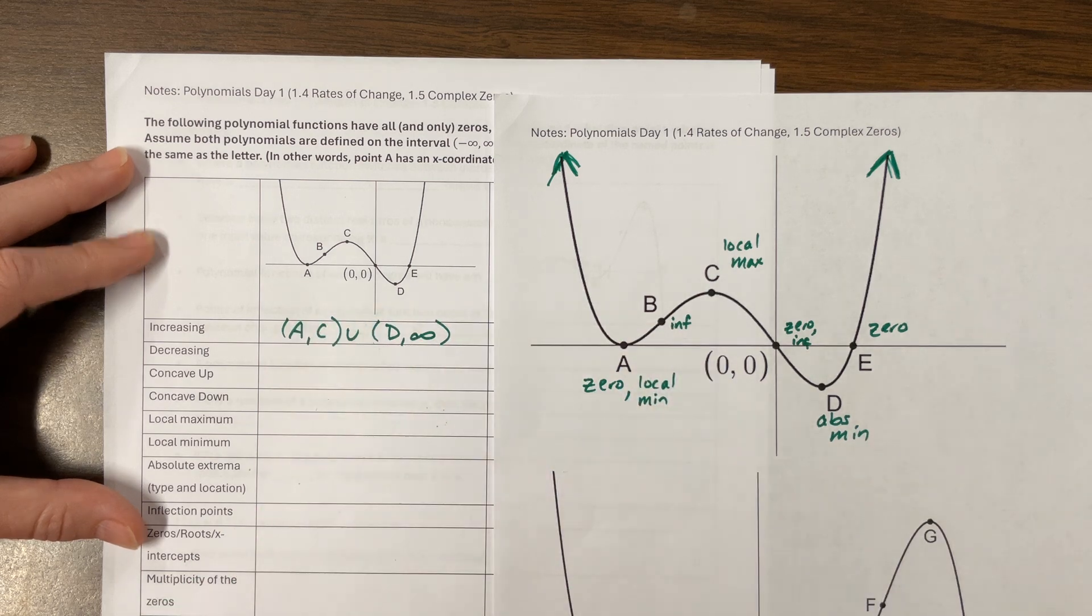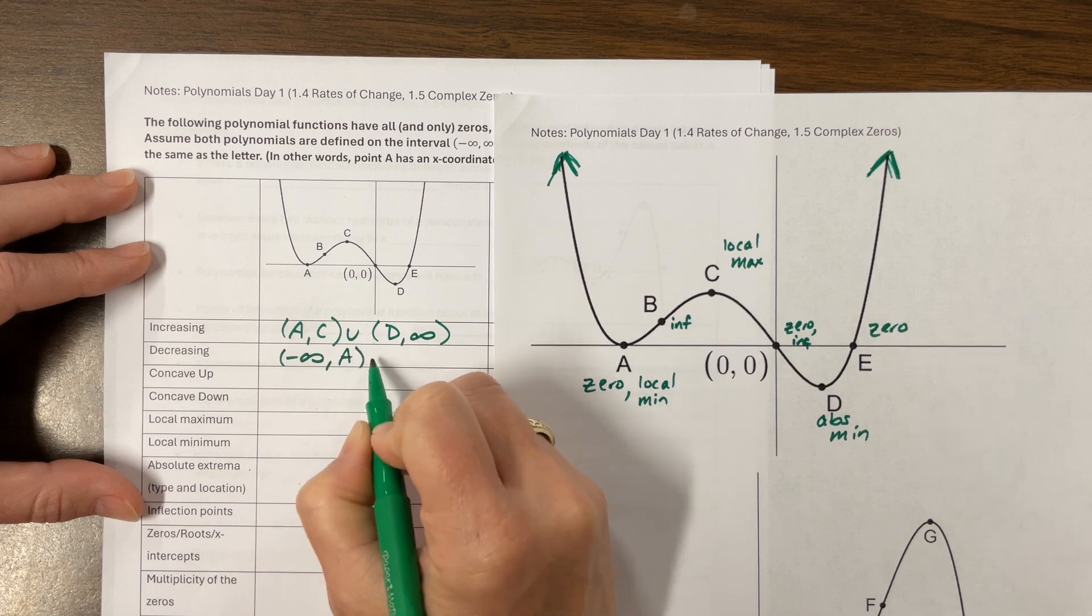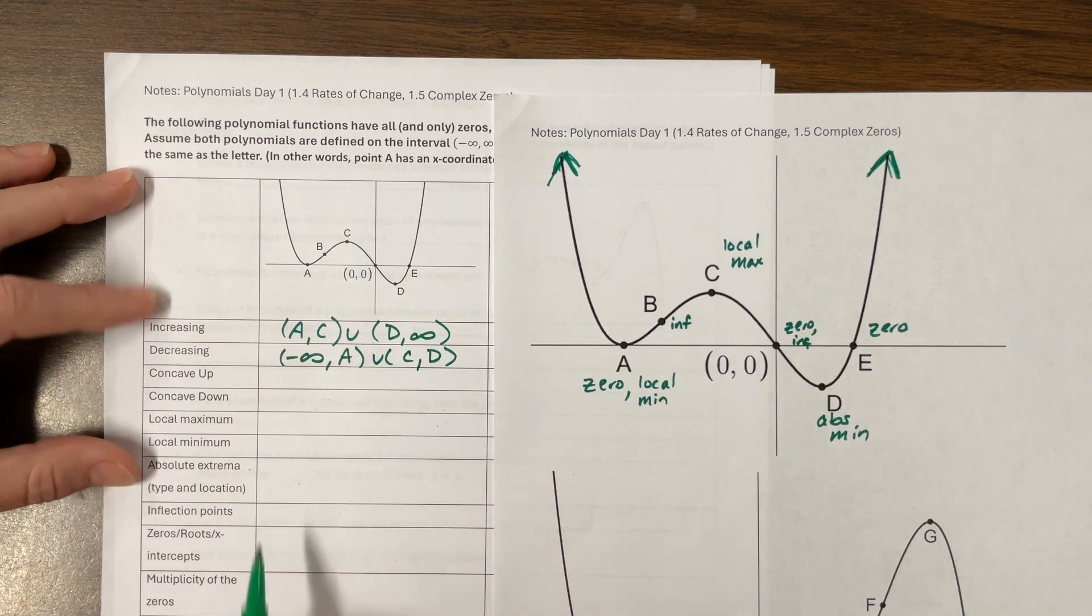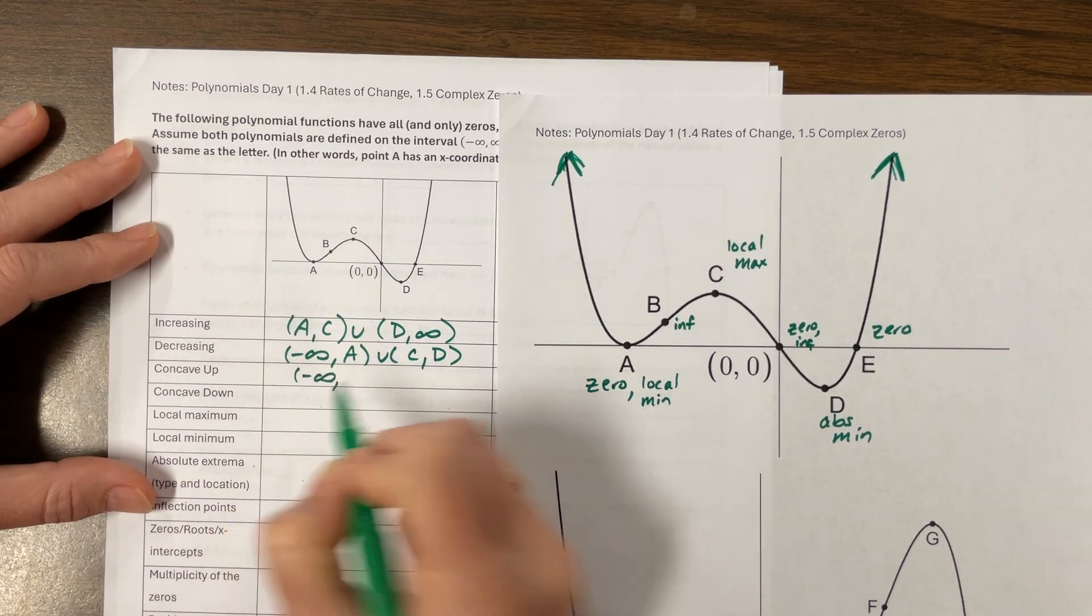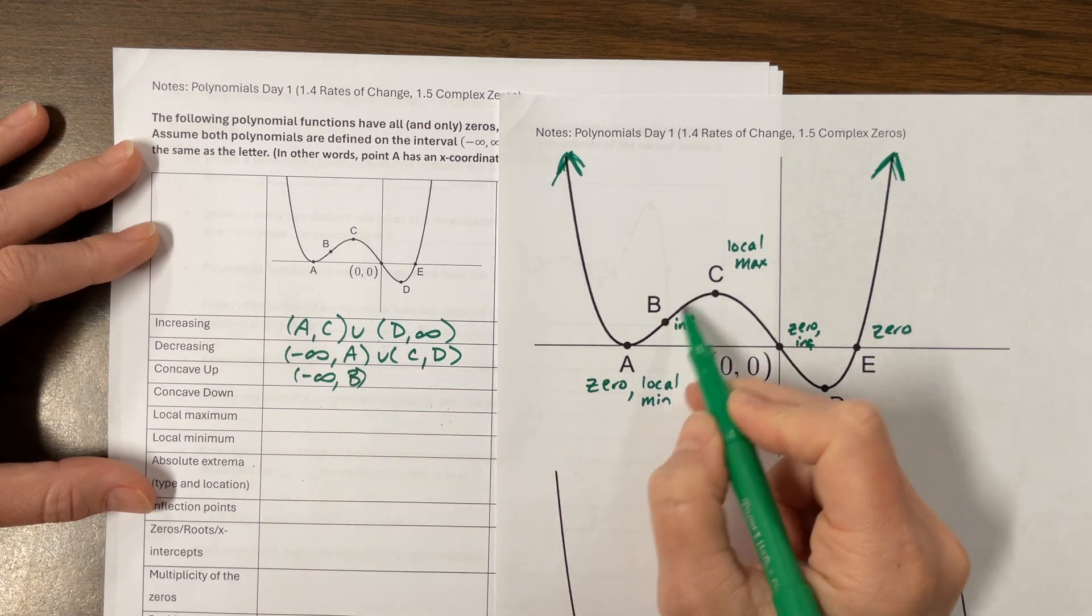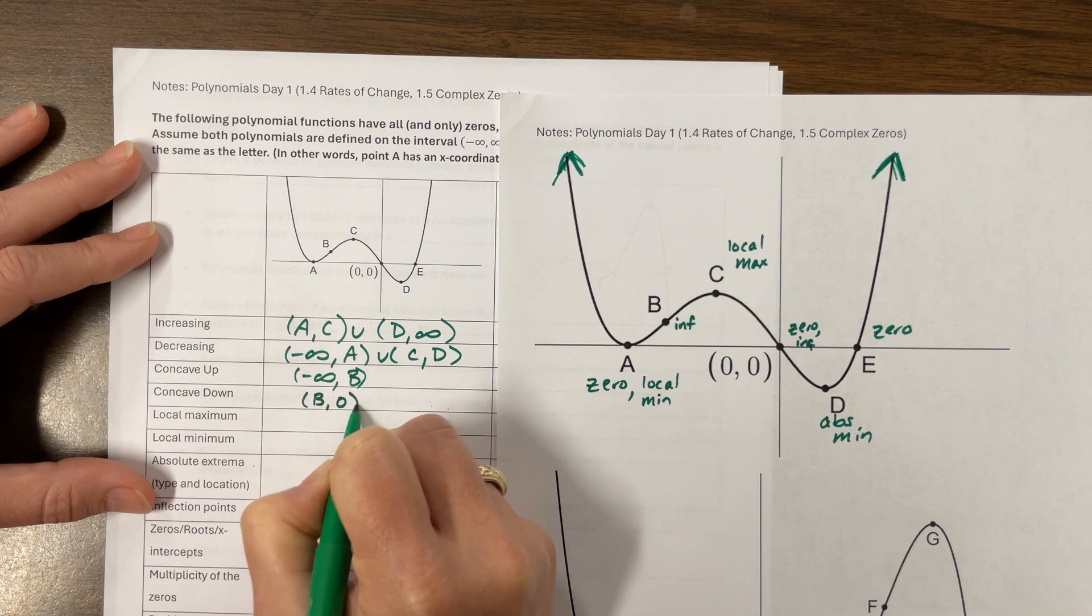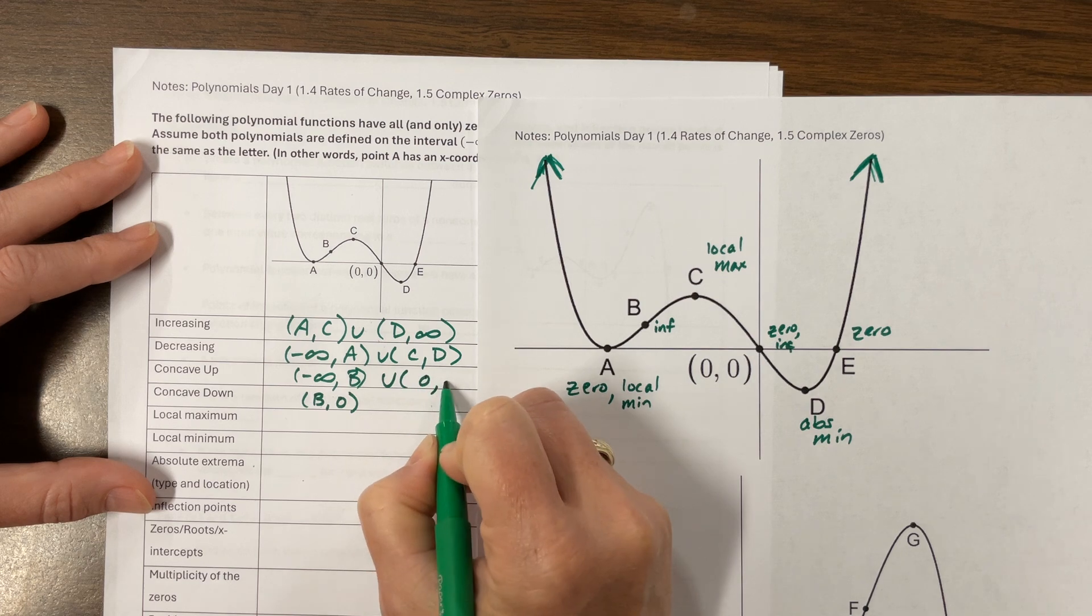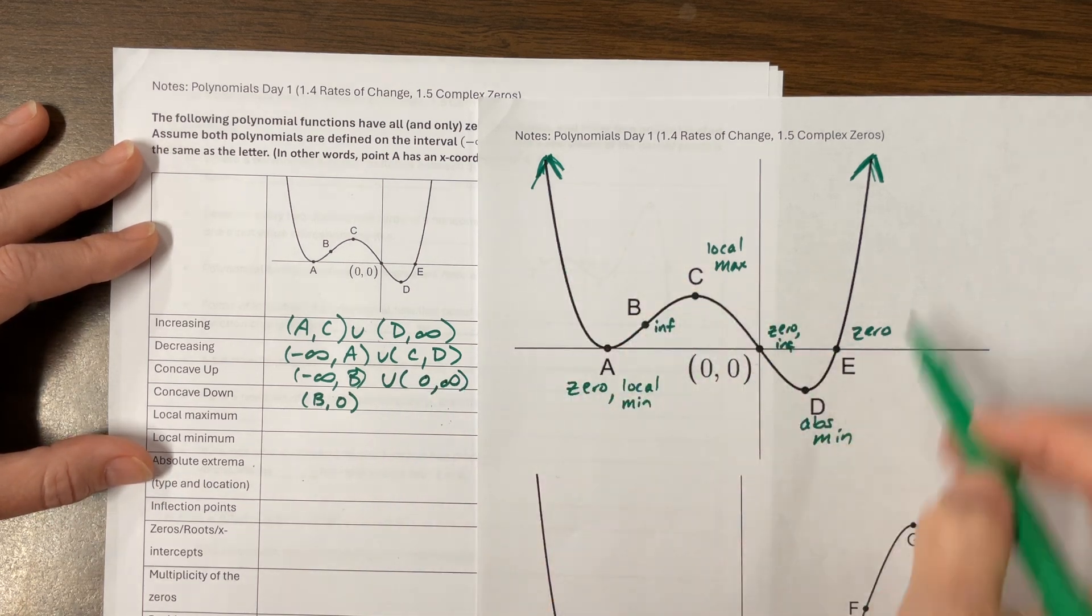So I've got the bigger version that might help you. It's decreasing from negative infinity to A. Then it picks it up again and decreases from C to D. It's concave up from negative infinity to this inflection point here at B. And then it's concave down from B to zero. And then it's concave up again from zero to infinity. So it was up, down, up. And there we go.